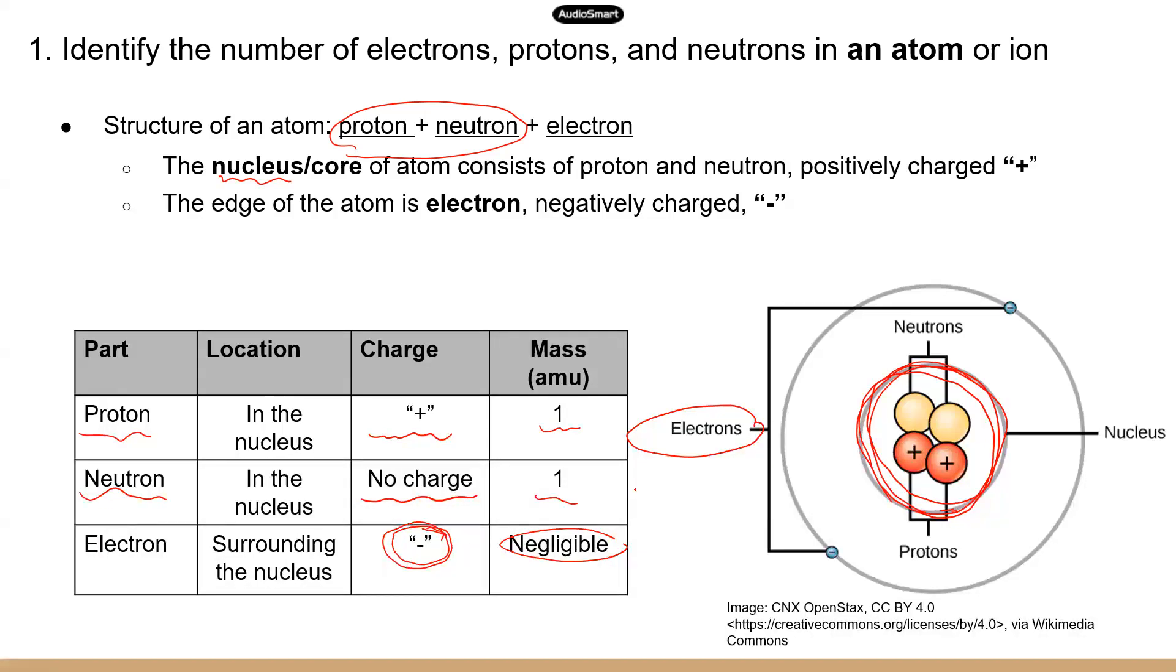Now, to remember the charge, you can use this trick. Proton starts with a P, right? And then positive also starts with a P. So you know that protons are positively charged. And then neutrons, you know, neutron, right? Again, like I said, the name kind of gives away. And in terms of weight, you just have to remember, you know, electrons are very small. That's why they can fly in high speed, right? Because they're very small. They can move very quickly. So the only subatomic particles that have a weight is the other two, right? The protons and the neutrons.